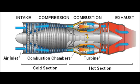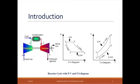In common usage, the term jet engine loosely refers to an internal combustion air-breathing jet engine. These typically consist of an engine with a rotary air compressor powered by a turbine, with the leftover power providing thrust via a propelling nozzle. These types of jet engines are primarily used by jet aircraft for long distance travel.